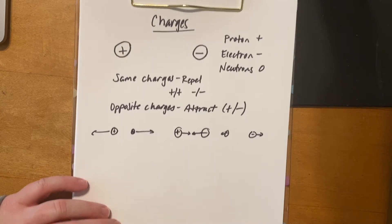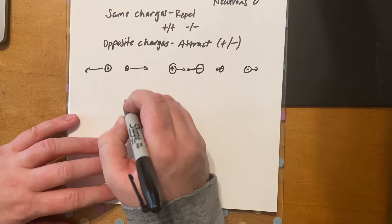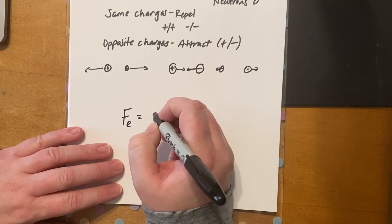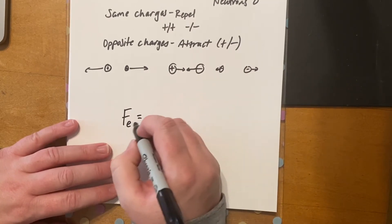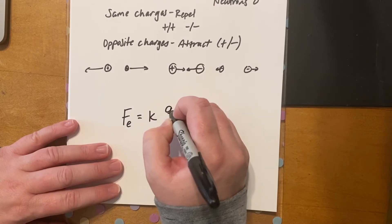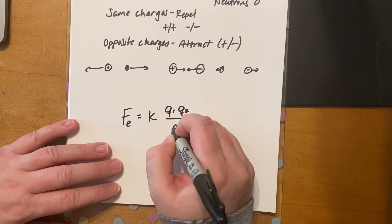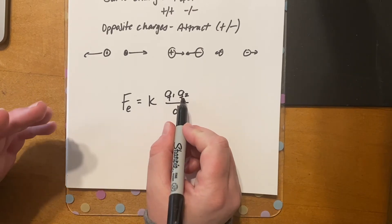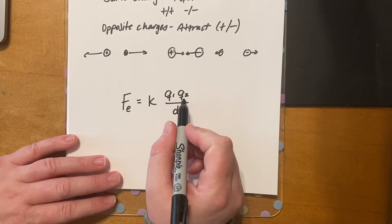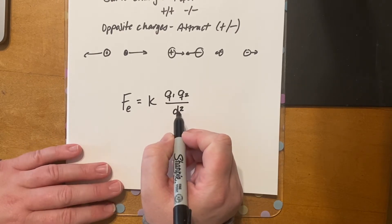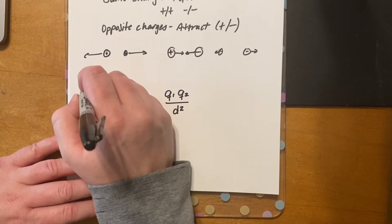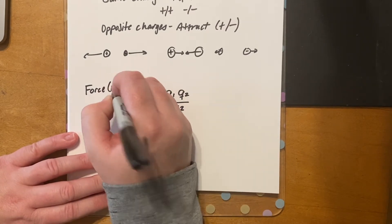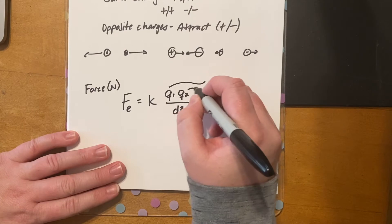To find the force we use a force equation that looks a lot like the gravitational equation. Gravity used masses and distance; here we have charges and distance. The equation is: Fe = k × q1 × q2 / d². q1 and q2 are the charges of the two objects — the labels one and two are arbitrary — and d is the distance between them. The electric force Fe is still measured in newtons.